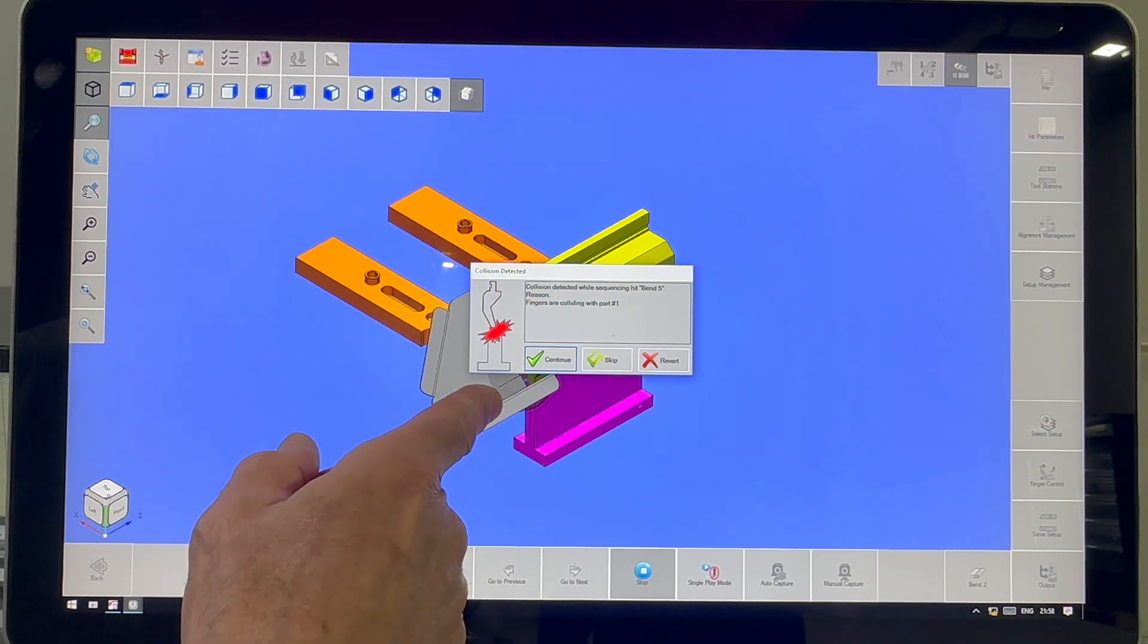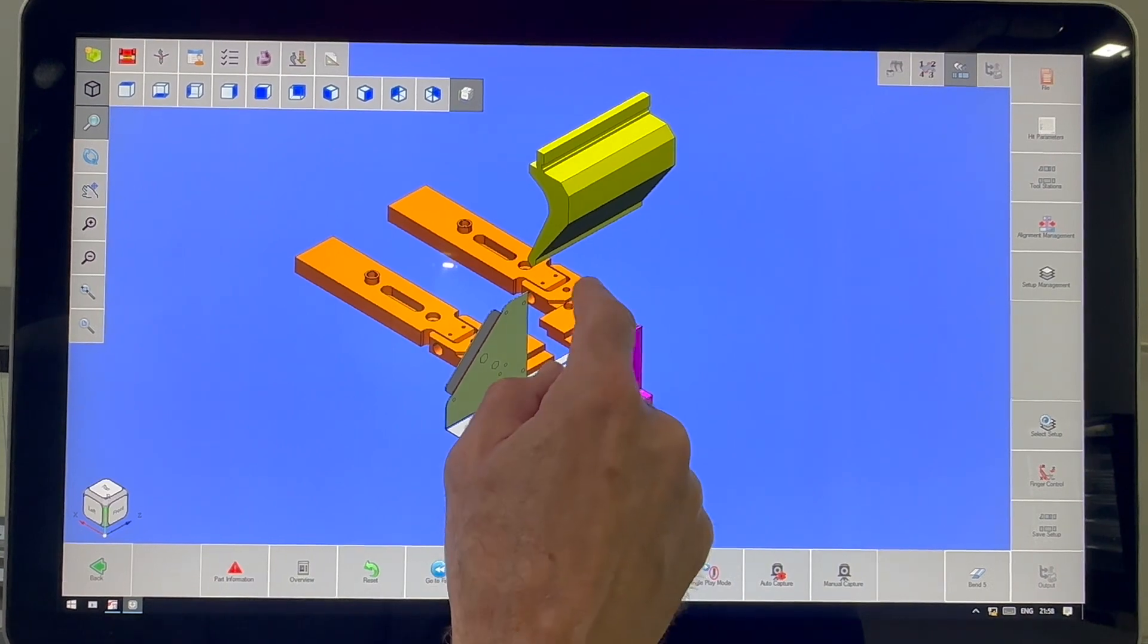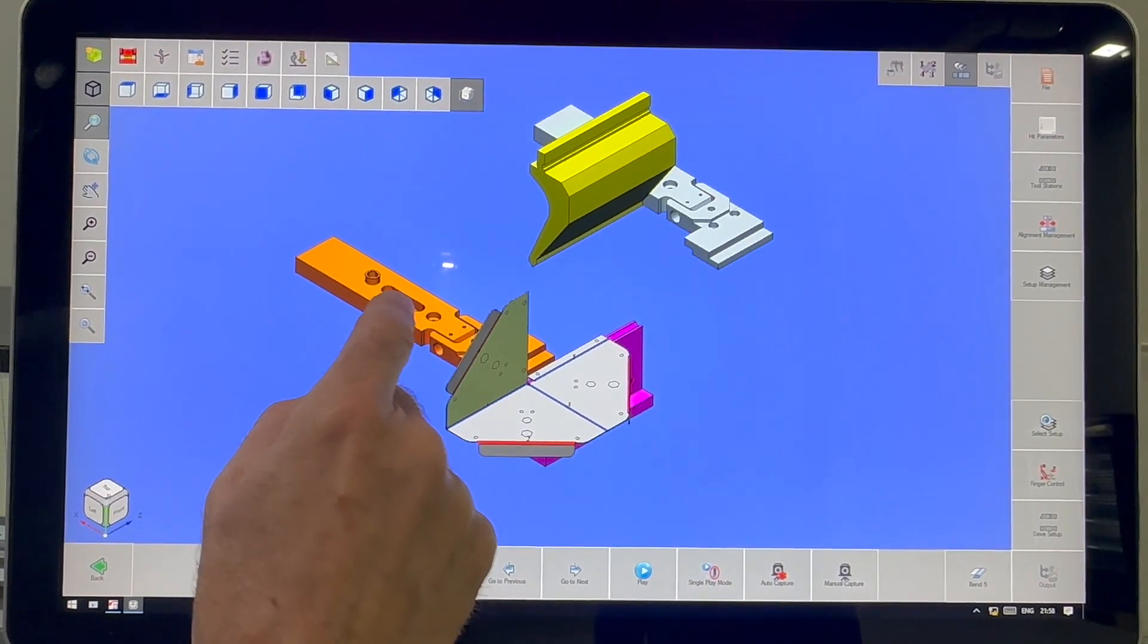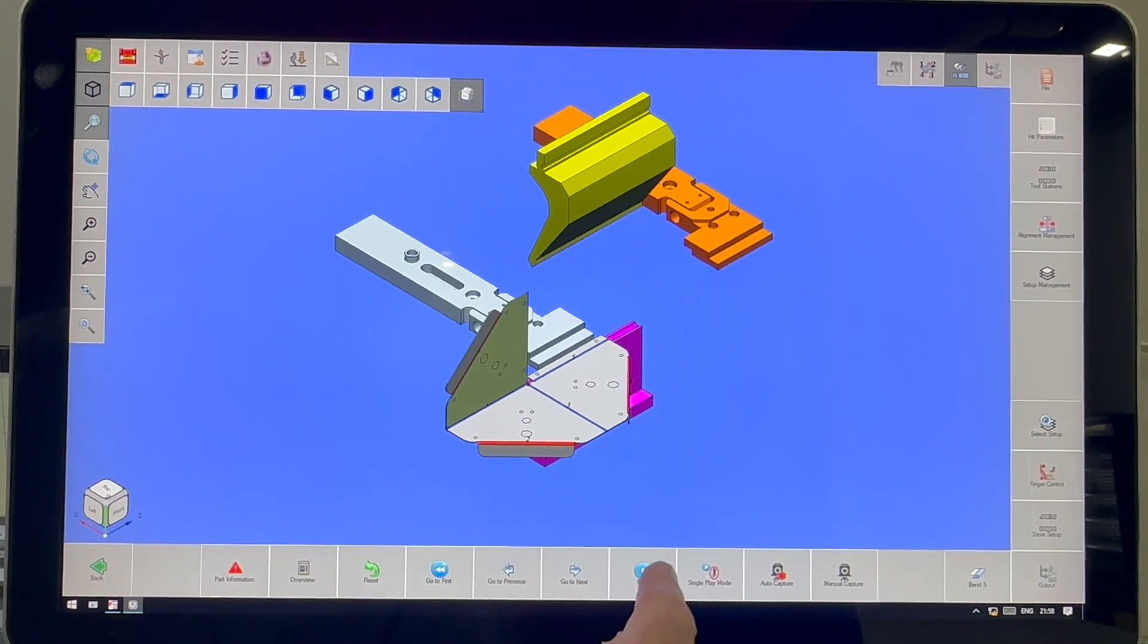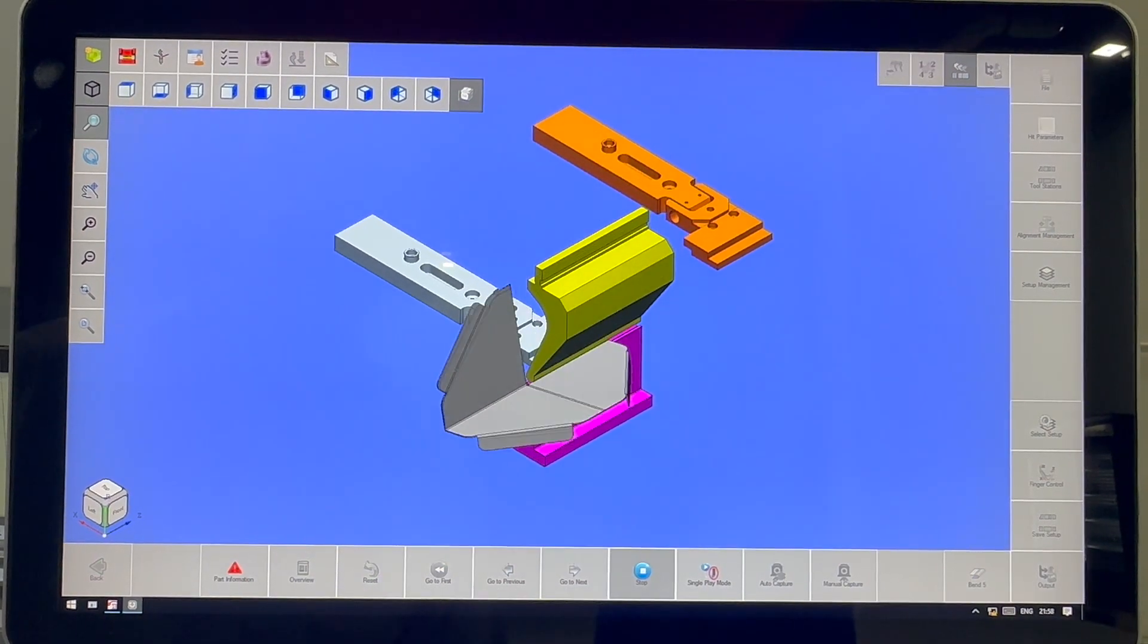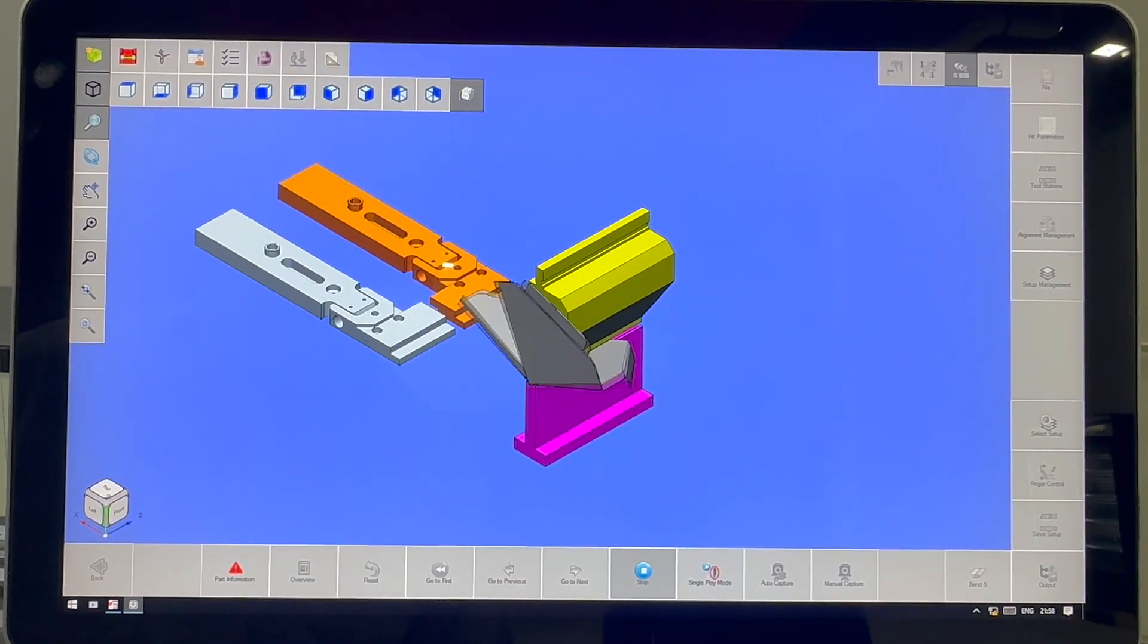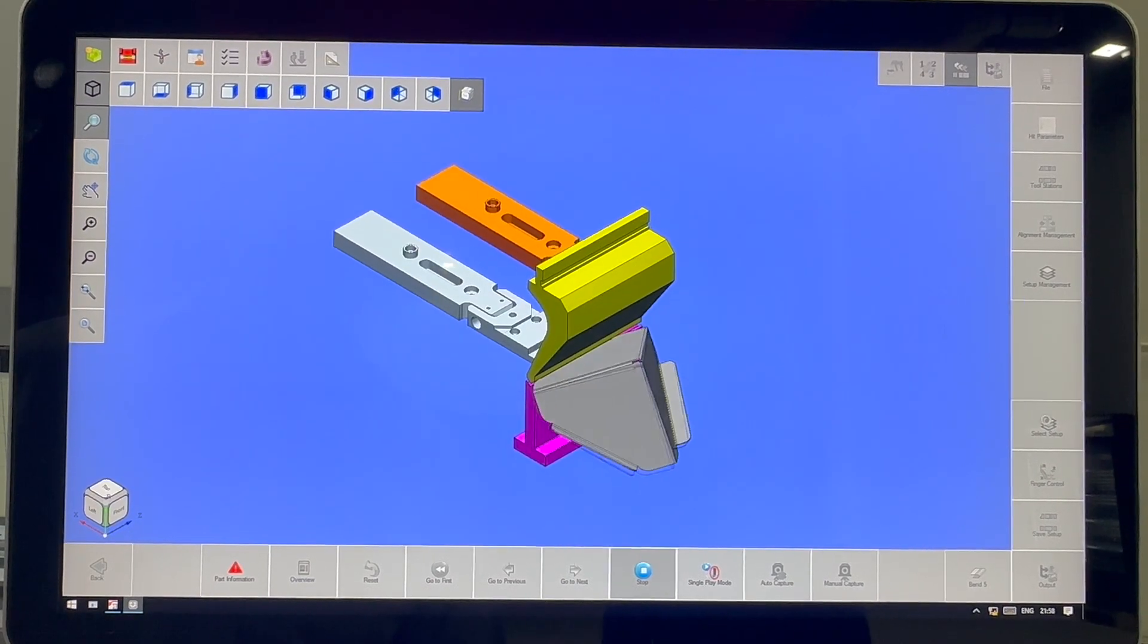Now here we had a very slight collision with this finger and the part. You can see it right here. And it paused. I'm going to go stop for a second. I'm going to get that finger out of the way and move this one over. And I'm going to continue and hit play. And the part is complete.